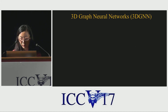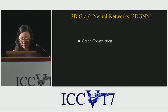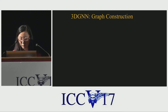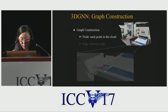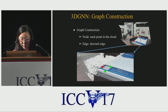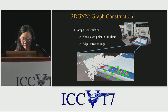We propose 3D graph neural networks to learn representations over the graph. In the following, we will talk about the details of our 3D graph network. It contains two major parts: the graph construction part, and learning representations over the graph. Given the point cloud, each point in the cloud is viewed as a node in the graph. Directed edges are built by connecting its nearest neighbors in 3D to the current node. We can see that the points that are near each other in 2D are naturally separated in the 3D graph.